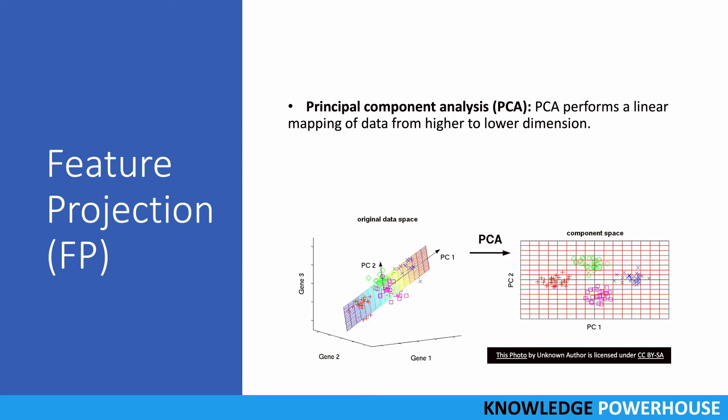One of the techniques here is Principal Component Analysis (PCA). If you see this example here, we have original data space which is in 3D, right? There are different kinds of features: gene 1, gene 2, gene 3.